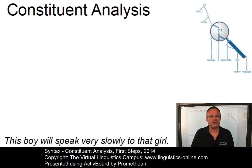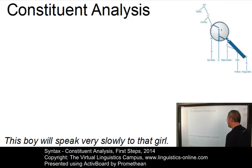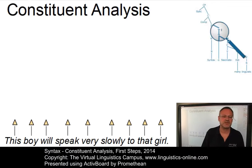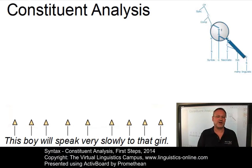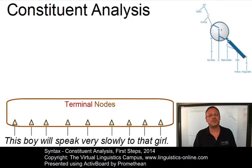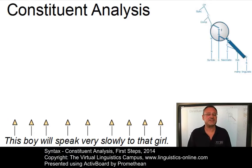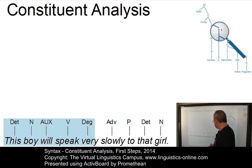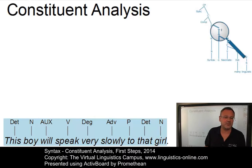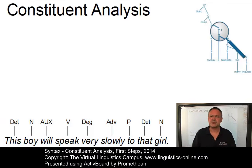In a first step, we associate each word with its own branch and a label on top. The labels are referred to as nodes. Since these nodes, which are represented as little deltas here, are lowest in the hierarchy, they are referred to as terminal nodes. Let us now replace the deltas with their respective syntactic categories: 'this' is a determiner, 'boy' a noun, 'will' is an auxiliary verb, 'speak' is a verb, 'very' is a degree adverb, 'slowly' an adverb, 'to' a preposition, 'that' another determiner, and 'girl' is another noun. So this categorical — or word class or part of speech — analysis is always the first step.